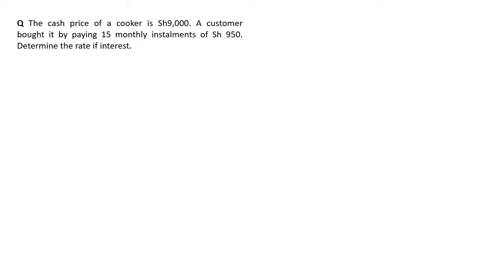Before I ask this question, the cash price of a cooker is 9,000, a customer bought it by paying 15 monthly installments of 950 shillings, so finding the rate of interest. Now, in the previous video, we said that the rate of interest normally is assumed to be compound interest and therefore it follows the formula of compound interest.